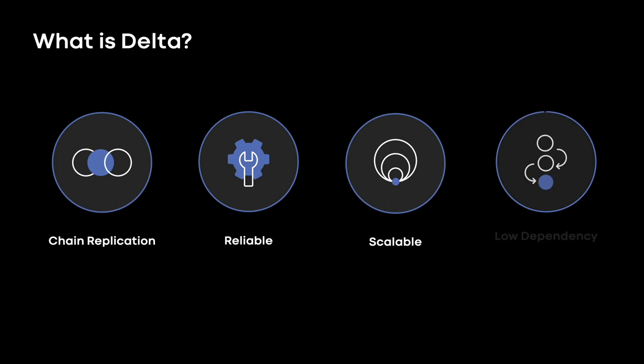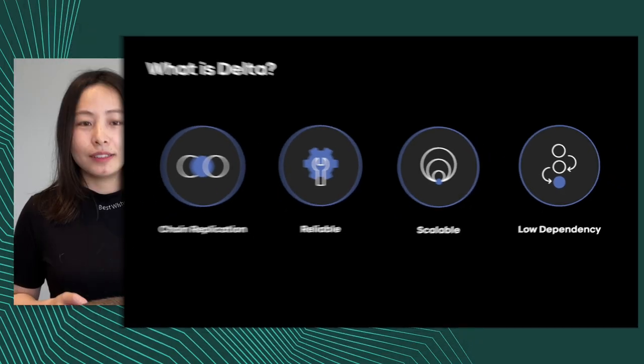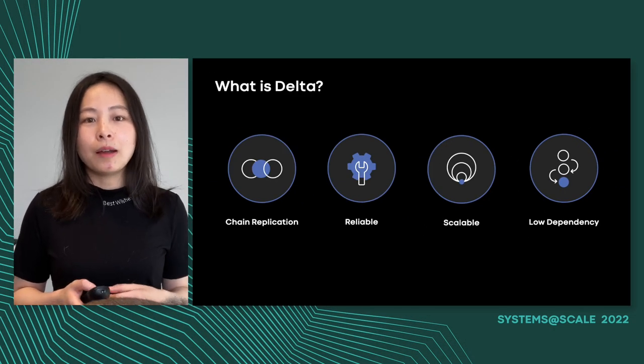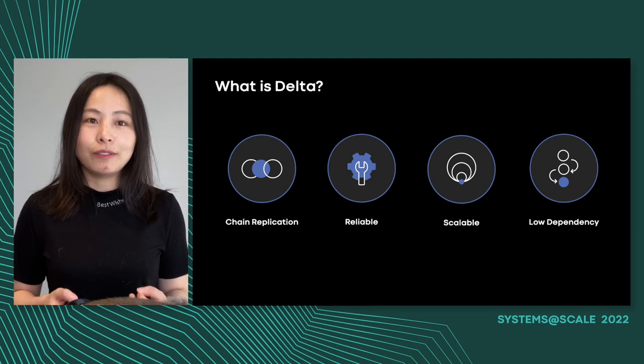Okay, let's talk about what is Delta first. Delta is a chain replication based, highly reliable, scalable, and low dependency blob storage. At the same time, Delta is also the first implementation of chain replication inside Meta. Before diving deep into the Delta technical details, I'm also going to walk you through a little bit why Delta was introduced at the very beginning.